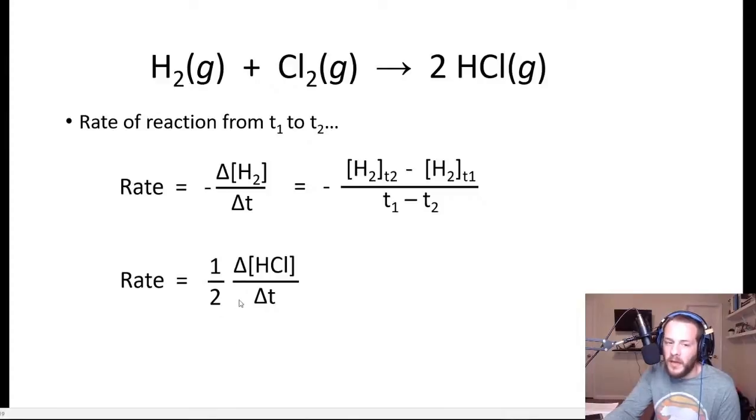So in order to have a single rate for the entire reaction, we have to take stoichiometry into account. Because if you think about this, since two moles of HCl are produced for every one mole of hydrogen that is consumed, the rate at which the HCl is forming is going to be twice as fast as the rate at which the H2 is being consumed.